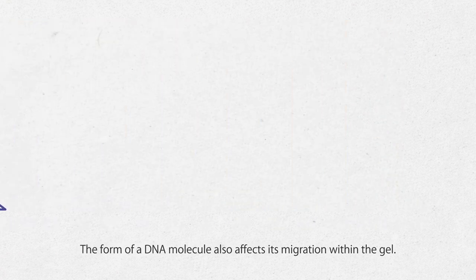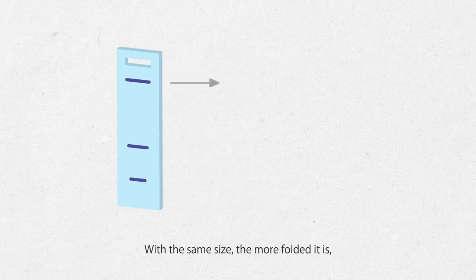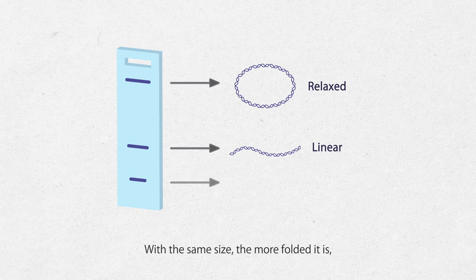The form of a DNA molecule also affects its migration within the gel. With the same size, the more folded it is, the easier it can migrate through the gel pores and thus travel faster through the gel.